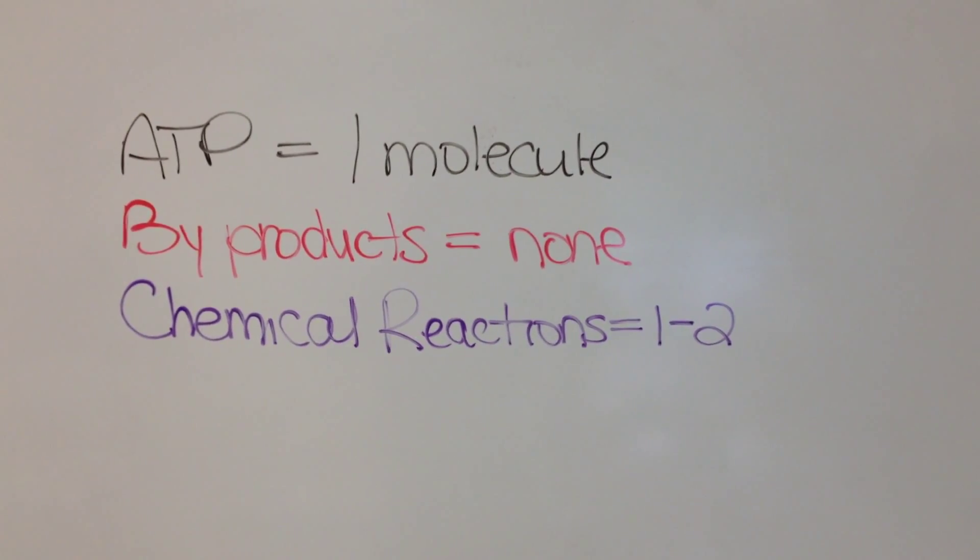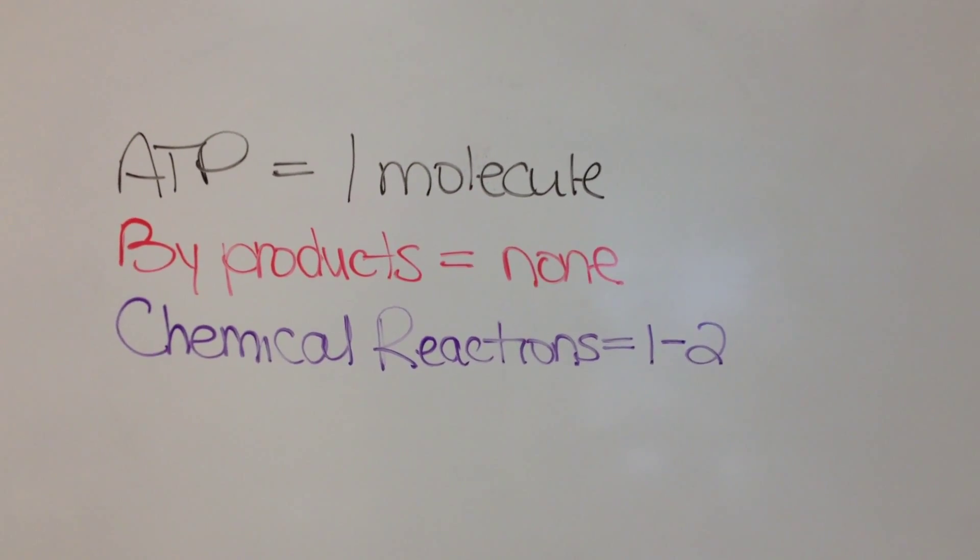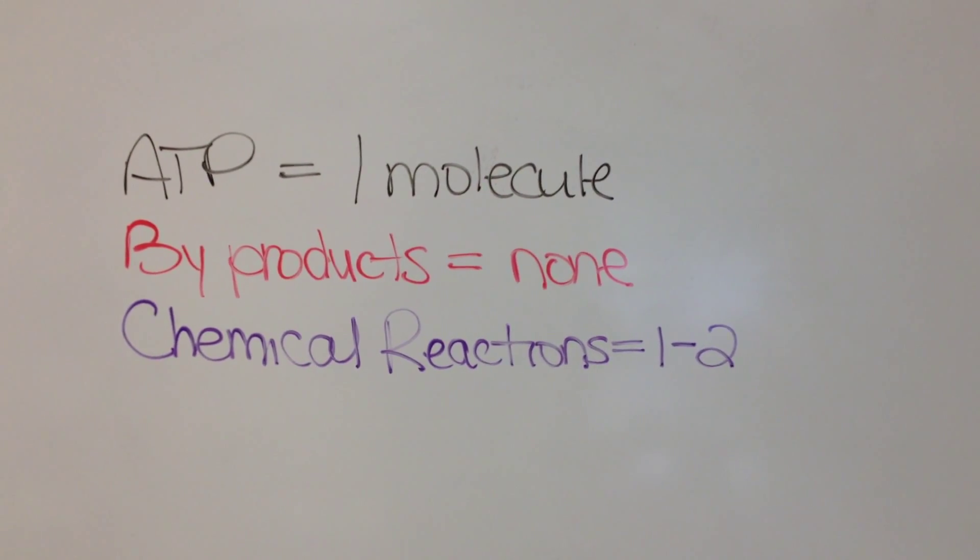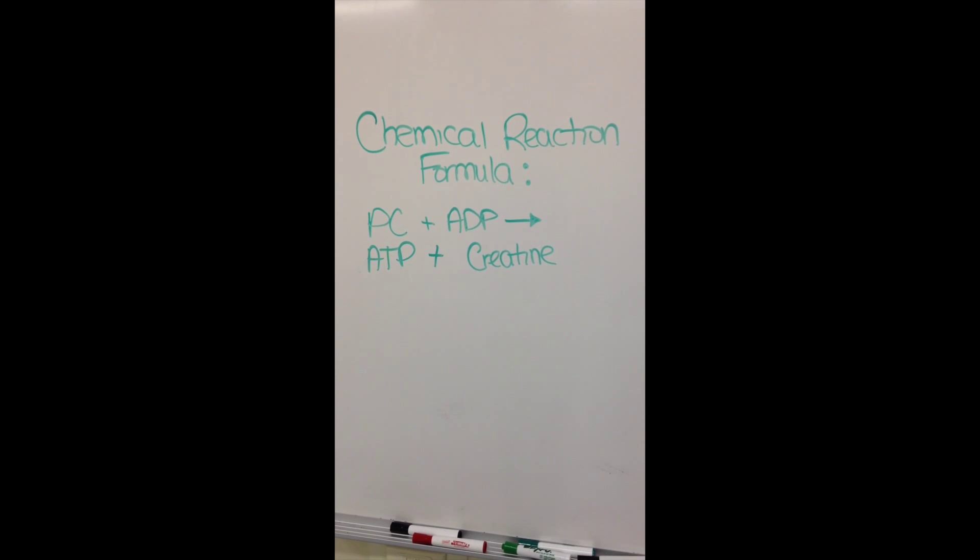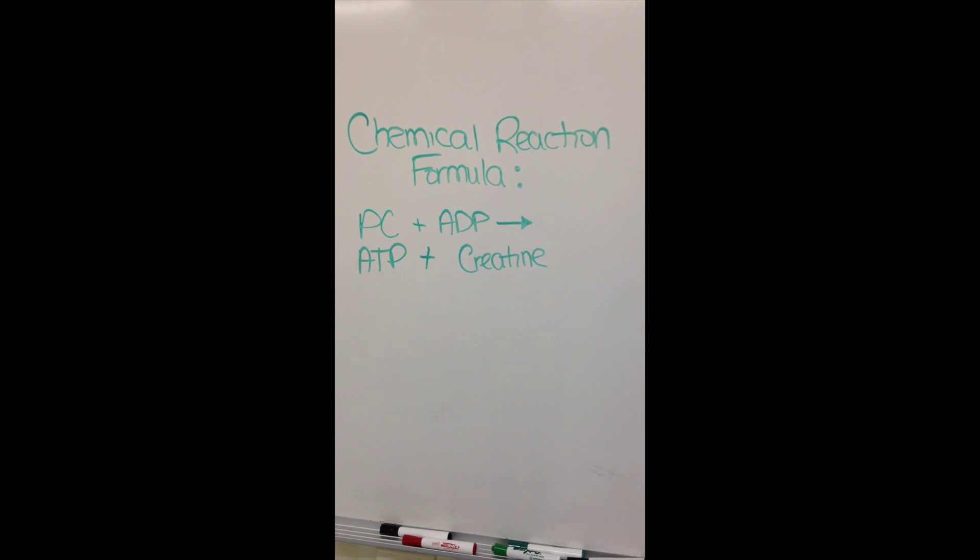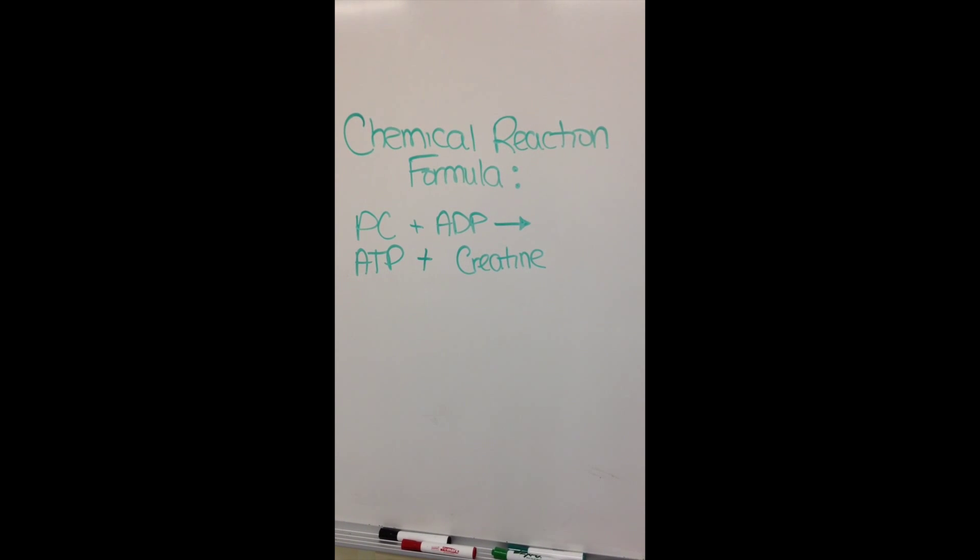ATP-PC is anaerobic, it uses no oxygen. In the ATP-PC system, one molecule of ATP is produced, there are no byproducts, there are one to two chemical reactions. The chemical reaction formula for ATP-PC is PC plus ADP equals ATP plus creatine.